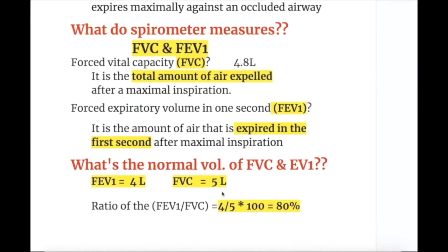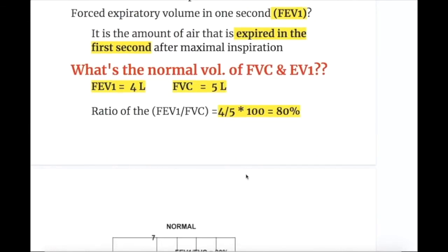A spirometer measures forced vital capacity (FVC) and forced expiratory volume in one second (FEV1). FVC is the total amount of air expelled after a maximal inspiration, normally about 4.8 liters. FEV1 is the amount of air expired in the first second after maximal inspiration. Normally, FEV1 is 4 liters and FVC is 5 liters, giving a ratio of 80%.